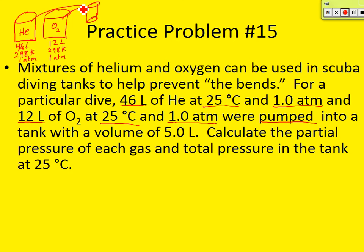Now let's list the variables of this tank that we know. What was the volume of that tank? 5 liters. And what was the temperature in that tank? 298 Kelvin. Now do we know the pressure? We don't — that's what this question wants us to figure out: what's the pressure inside that tank? This tank is going to have helium in it and oxygen in it. So can we use Dalton's Law of Partial Pressure to figure this out? Yes, and that's what we're going to do.